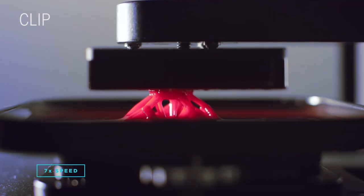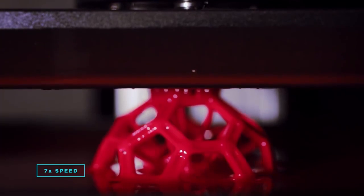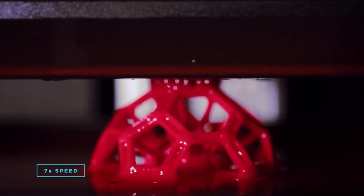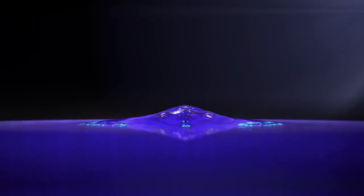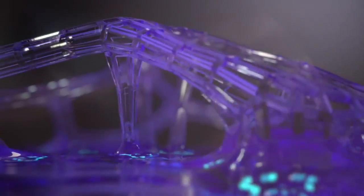CLIP works by projecting a series of ultraviolet images through a special window located below a bath of liquid resin. The light causes the resin to harden into the projected shape, like a series of solidifying movie frames.